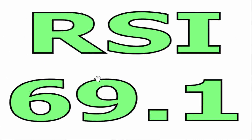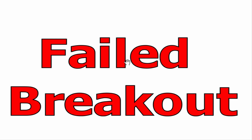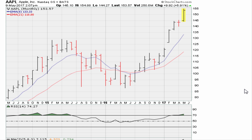Eric from mothercalm.com. Let's take a look at the chart for Apple. We are going to consider two things: number one is the RSI level of 69.1 on the monthly, and number two the idea of a failed breakout. Let's go to the chart — here we have three years of monthly data.